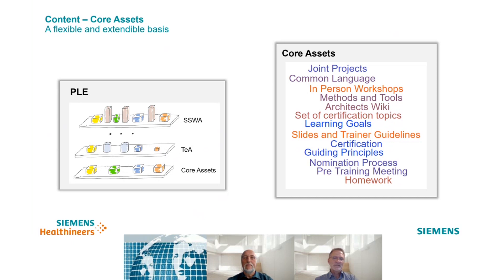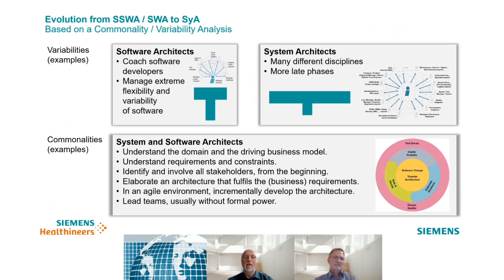However, there are variations and differences as well. The senior software architects training has four separate certification gates while the other trainings only have one interview-based certification at the end. All certifications have in common that we focus on capabilities — the way candidates act in their daily work — and less on pure knowledge about training content. Any PLE endeavor starts with a commonality-variability analysis, and when developing the system architect program, a CV analysis was conducted. There are many commonalities between software and system architects: both have to understand the domain and the driving business models, understand requirements and constraints, identify important stakeholders, and involve them from the beginning when elaborating an architecture.